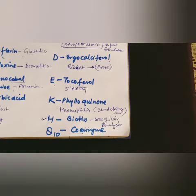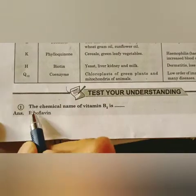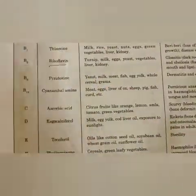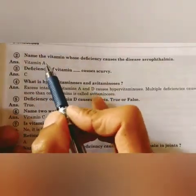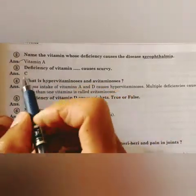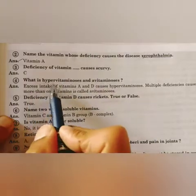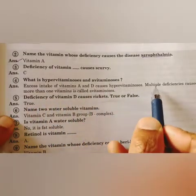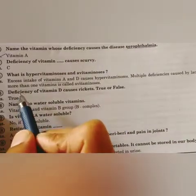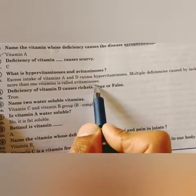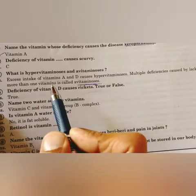One-mark exam questions on vitamins: The chemical name of vitamin B2 is riboflavin. Xerophthalmia is caused by deficiency of vitamin A, also known as night blindness. Deficiency of vitamin C causes scurvy. Excess intake of vitamins A and D causes hypervitaminosis. Multiple deficiency caused by lack of more than one vitamin is called avitaminosis.